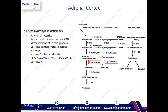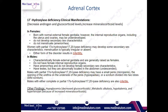In 11-beta-hydroxylase deficiency, there is no cortisol, and aldosterone levels may be reduced, although aldosterone synthesis is also influenced by 21-hydroxylase. Again, all precursors are shifted toward sex hormone synthesis, and the person or baby may have no endogenous sex hormone production, which can lead to infertility.